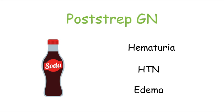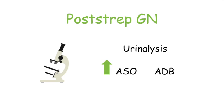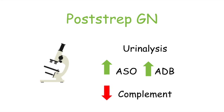To diagnose post-strep GN, urinalysis may reveal hematuria, red blood cell casts, and proteinuria. Labs may also reveal an elevated anti-streptolysin O titer, an elevated anti-DNase B titer, and a decreased complement level. It is high-yield to note that post-strep glomerulonephritis most commonly affects children.